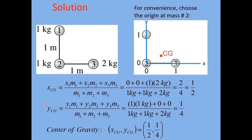For the Y coordinate, the first mass has Y1 = 1 meter with M1 = 1 kilogram. The other two objects have Y = 0. So the numerator is 1 × 1 = 1, and the denominator is again the total mass of 4 kilograms, giving Y_CG = 1/4 meter. Putting this together, the center of gravity is located at X = 1/2 m, Y = 1/4 m — the average position of all the mass in this system.